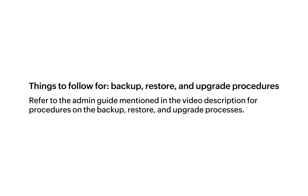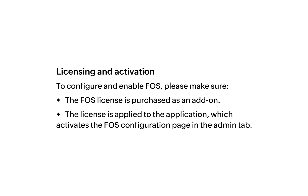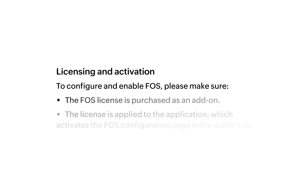Things to follow up for backup, restore, and upgrade procedures: please refer to the admin guide mentioned in the video description for procedures on backup, restore, and upgrade processes. These are important items for customers to keep in mind when planning for an upgrade, backup, or restore process. For licensing and activation: to configure and enable failover service, please make sure the failover service license is purchased as an add-on. The license is applied to the application, which activates the failover configuration page in the Admin tab.